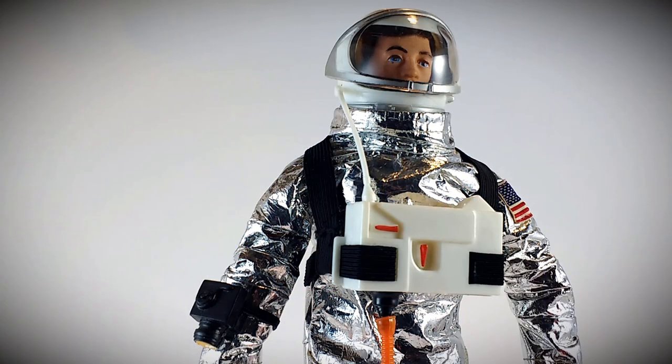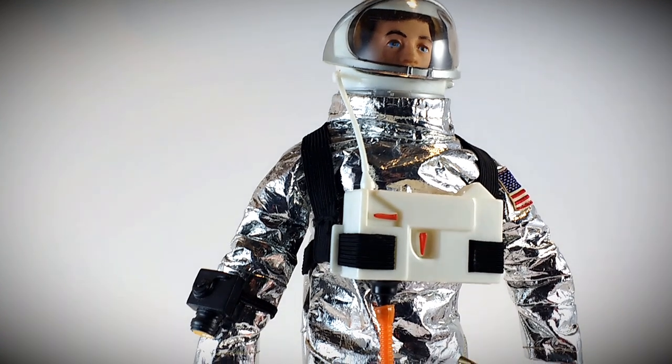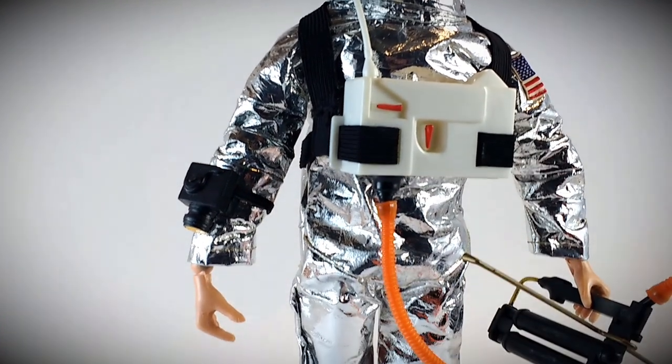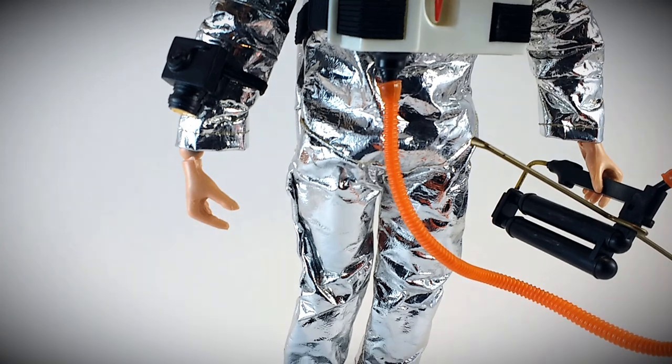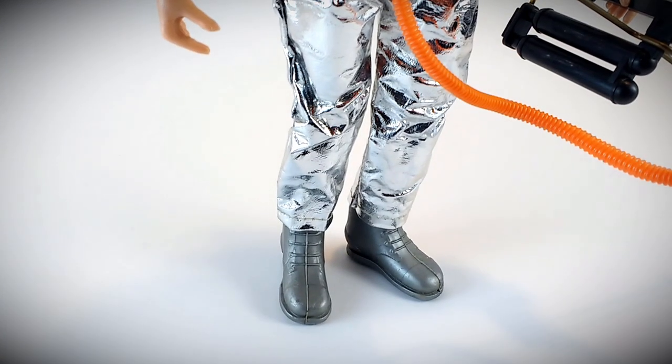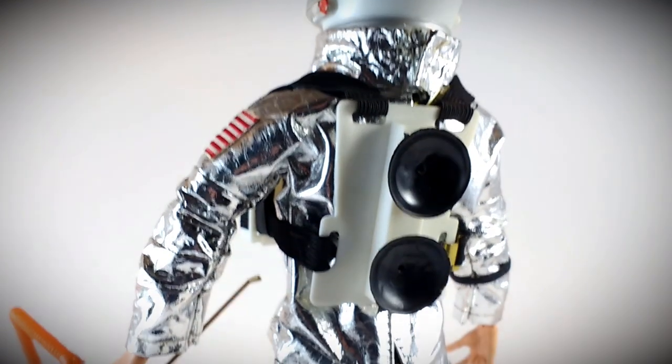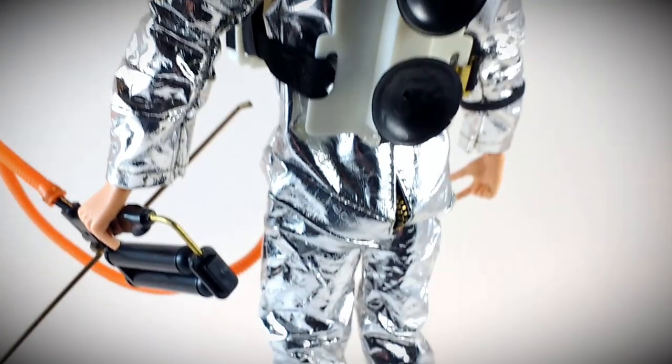So in this 1970 box set for $7.99, you got an action figure with lifelike hair, suit, the boots, helmet, propellant gun, oxygen chest pack, a wrist camera, the tether, a record, mini comic, and of course, the space capsule.